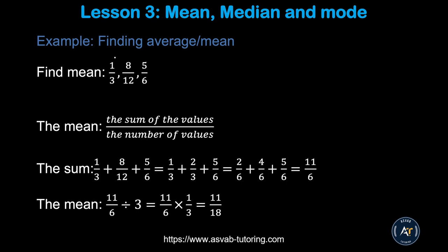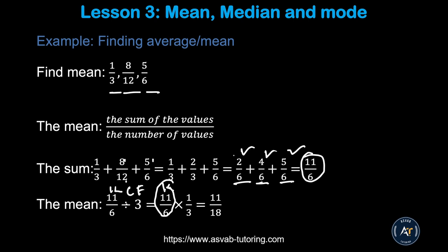This is another example using fractions. The same way — add the fractions together and then find the Average or Mean. You take the sum of the variables and divide by the number of variables. Add 1/3 plus 8/12 plus 5/6. You find the common denominator, which is 6, then find the equivalent fractions. Adding them gives you 11/6. There are 3 fractions, so divide by 3. Remember how to divide a fraction: keep, change, flip — keep 11/6, change division to multiplication, flip 3 to 1/3. Multiply top to top, bottom to bottom — that gives you 11/18.